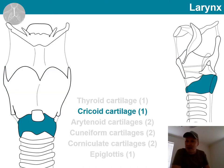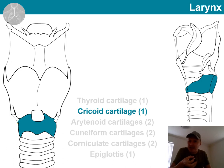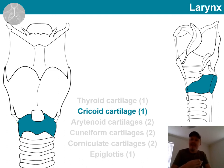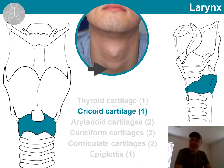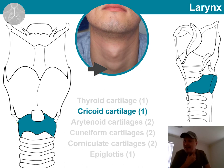Let's shift our focus to the cricoid cartilage. It is a ring-shaped structure — in fact, the only fully closed ring-like structure in the larynx. It forms the most inferior part of the larynx, and the trachea begins from here moving downwards. On some individuals, it is possible to feel it as a surface anatomy landmark.